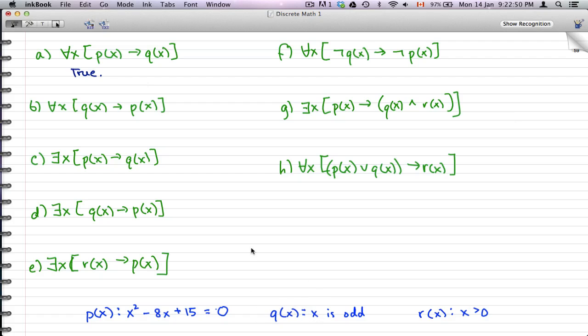For all x's, p(x) implies q(x). So this is true. If you try any odd numbers for p(x), then you'll get p(x) equal to zero, and x would be odd. Just try odd numbers and that'll work out right. b is false. Well, if you try x equal to one, then what will happen is that q(x) would be true while p(x) is false, and one implies zero would be zero.